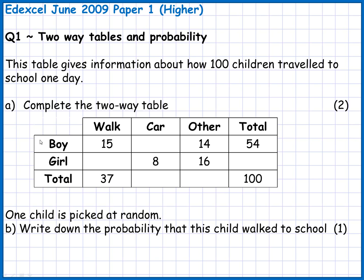On the left-hand side it's been split into gender — boys and girls — and along the top it's been split into the way that they get to school: walk, car, or other. At the end of each row and at the bottom we've got totals, which will be the totals for each particular group.